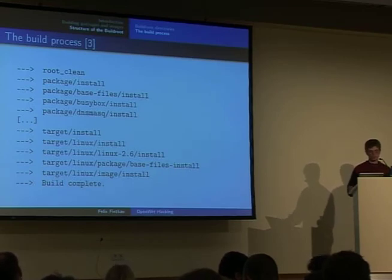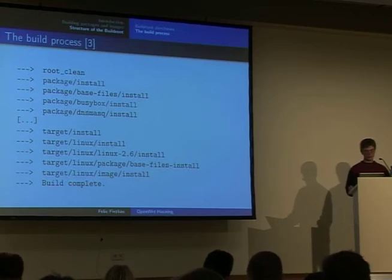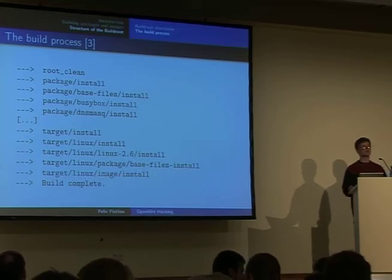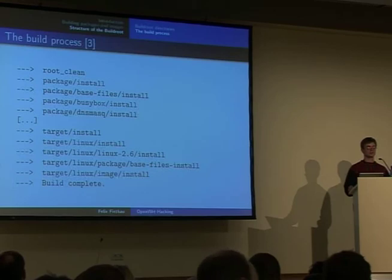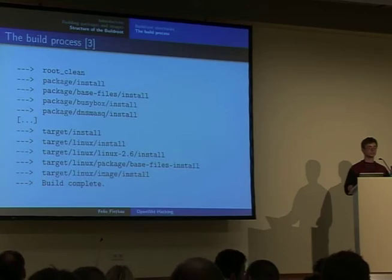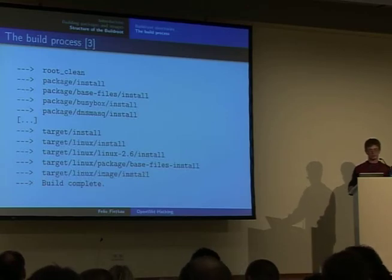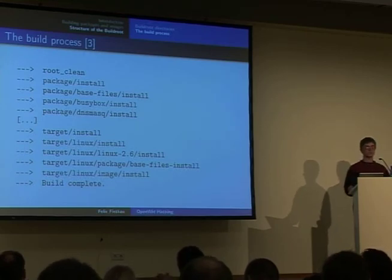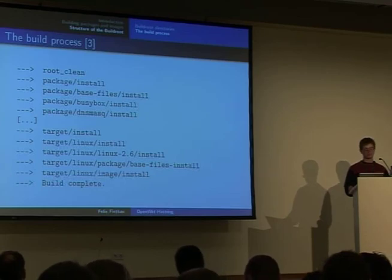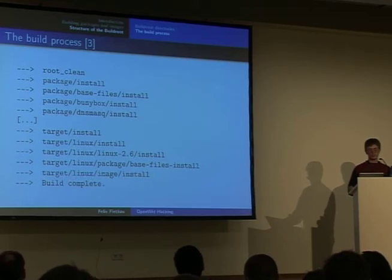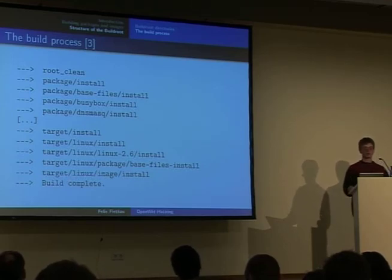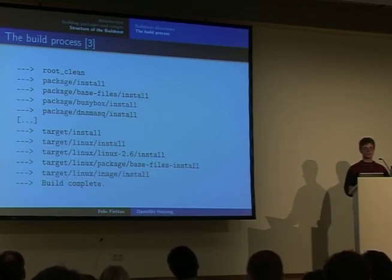There is a special directory called target/linux/package, which I haven't mentioned before — this is where all the package directories for kernel-specific stuff live. If you're building a kernel module which is not included in the kernel tree, you can add the build instructions to target/linux/package, which works much in the same way as the original package directory. The last step of the build process is to install everything and generate images, which is what target/linux/image/install does — and after that the build is complete.